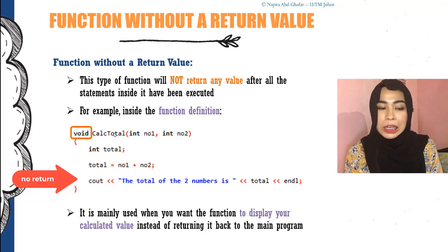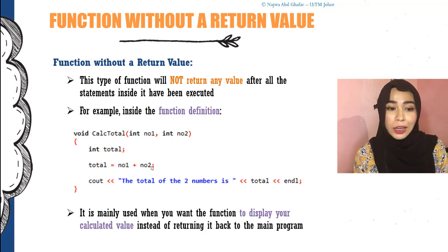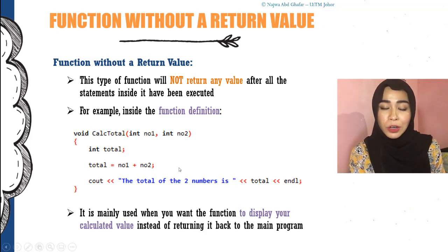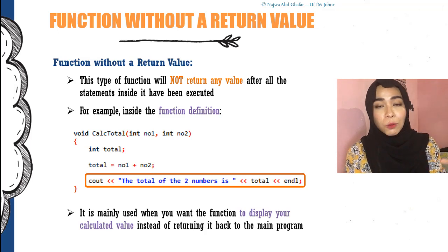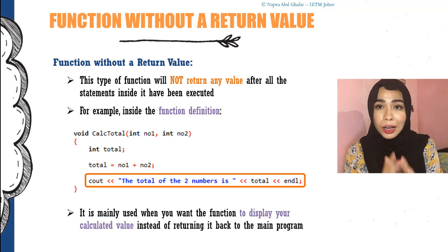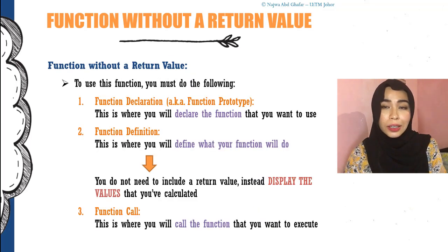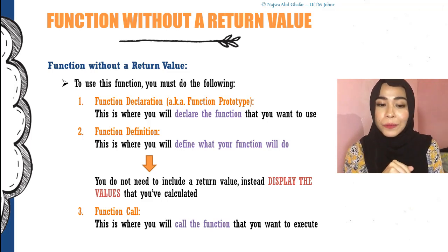Most of the time, we use a function without a return value to display something. For example, we want to calculate a total — you take in number one and number two from the parameters and calculate those two numbers. If you had a return value, you would do 'return total'. But since this is a function without a return value, instead of returning the value you display it instead. The function just ends there and doesn't give any value back to the caller. Inside the function definition, since there's no return value, you place 'void' at the top.